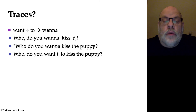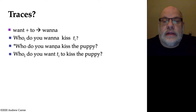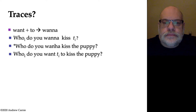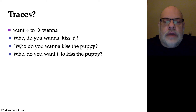For example, in this following sentence — "who do you wanna kiss the puppy" — where the who is the subject of the verb kiss, the who would have to come from between want and to. It will move there because of the Extended Projection Principle. So the who will have moved from right before kiss to right before to, for EPP reasons — not for case, but for EPP. And here's the puzzle: this contraction is not permitted. You cannot contract when the WH word originated between the want and the to.